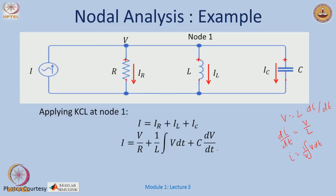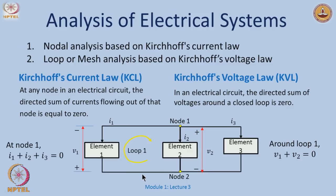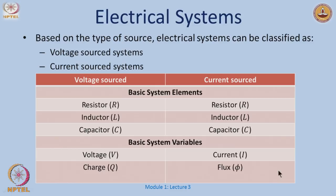We also know that V = dφ/dt, which means the current through the capacitor can be written as C·d²φ/dt². Across the resistor, V/R becomes (1/R)·dφ/dt, and across the inductor it is simply φ/L. This confirms that for a current source circuit, the basic system variables are the current and the flux — which is why we said the basic elements are current and flux for this type of system.